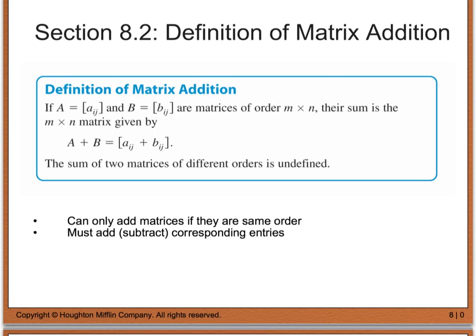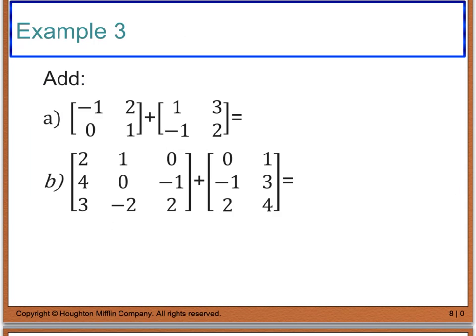Now let's look at matrix addition, which also includes subtraction. To add or subtract matrices, we first must make sure they are of the same order or same dimensions. If two matrices are not of the same order, the result is undefined — you cannot add them. If they are the same order, you add or subtract the corresponding entries. Let's look at example 3.